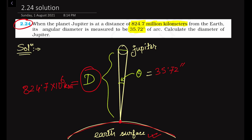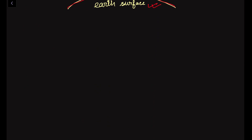This green line represents the diameter of Jupiter, and we have to find out this diameter using the parallax method. First, let us express the theta value in radian scale. To understand the conversion: 180 degrees is equal to pi radians, therefore one degree is equal to pi by 180 radians. This is the conversion from degree to radian scale.